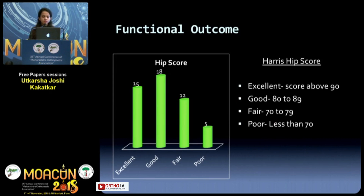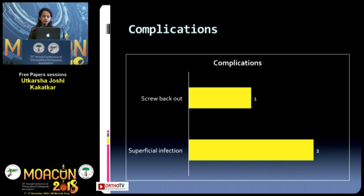The Harris hip score showed excellent results in 15 patients, good in 18, fair in 12, and poor in 5 patients. We encountered two complications: a screw back-out in one patient which needed revision, and superficial infection in two patients which were managed using antibiotics.